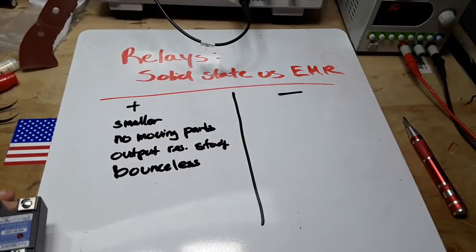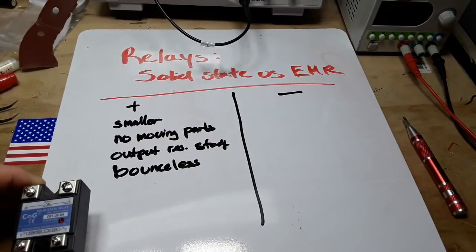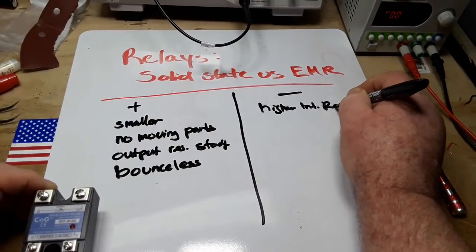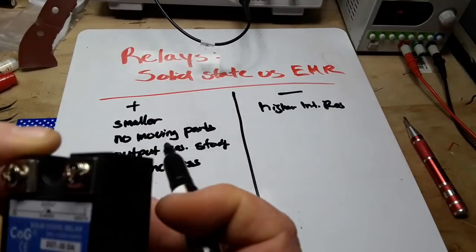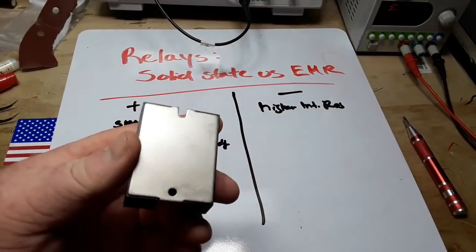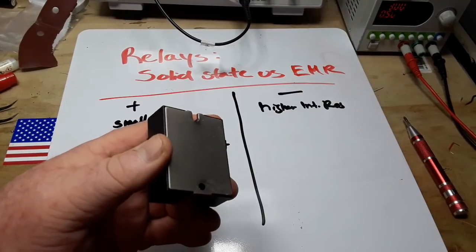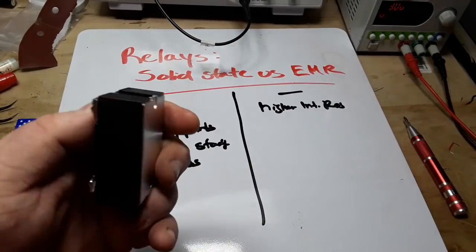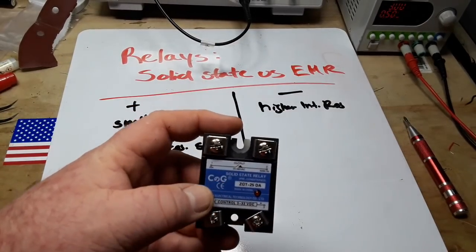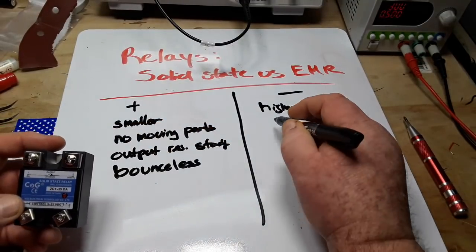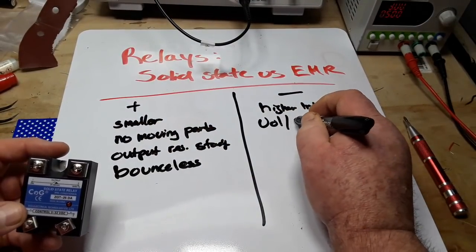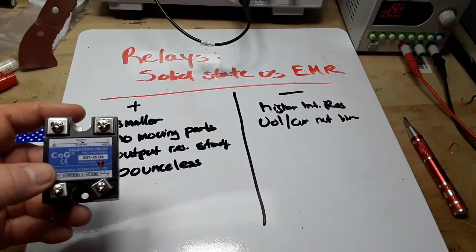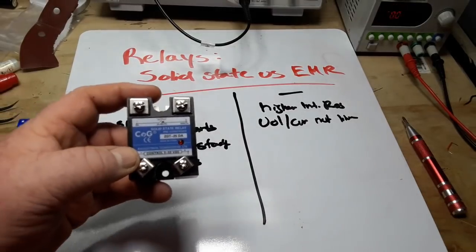So what are some of the disadvantages? Well, they're going to have a higher internal resistance, which means they're going to get hot, which is why you will find a heat sink plate on the back, and they generally need to be mounted to heat sinks. When they're open, they're going to have a very low resistance. Another downside is the voltage/current is not linear. So if you're looking at the waveform, you're going to get some distorted waveforms. It's generally not a big deal.